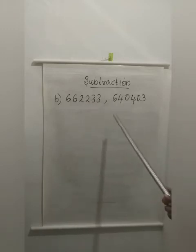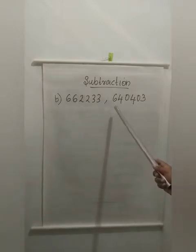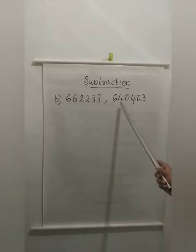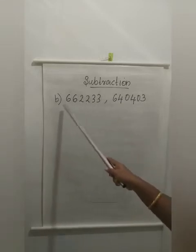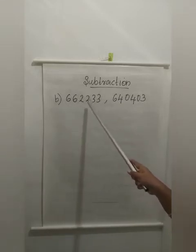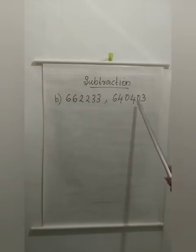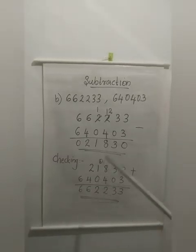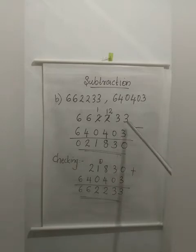So how can we compare? Go to the first digit. Here 6, here also 6. So go to the next digit. Here 6, here 4. So 6 is larger — which is the larger number? This is the larger number. So we write 6,62,233 first, then 6,40,403. Now we can subtract. I wrote the larger number first, then the smaller number.